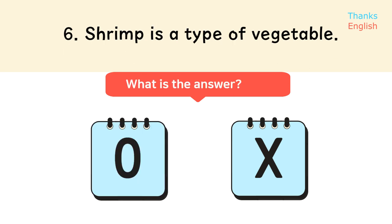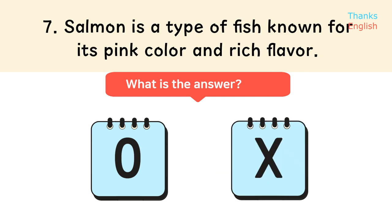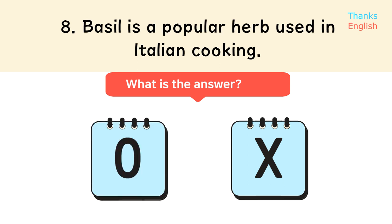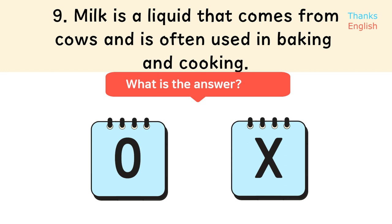6: Shrimp is a type of vegetable. [x] 7: Salmon is a type of fish known for its pink color and rich flavor. 8: Basil is a popular herb used in Italian cooking. 9: Milk is a liquid that comes from cows and is often used in baking and cooking.